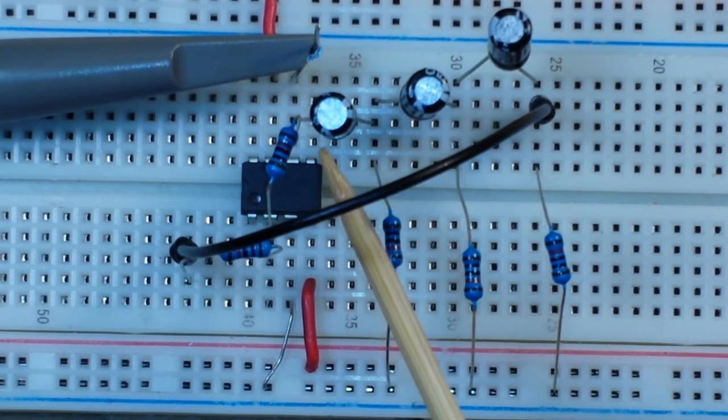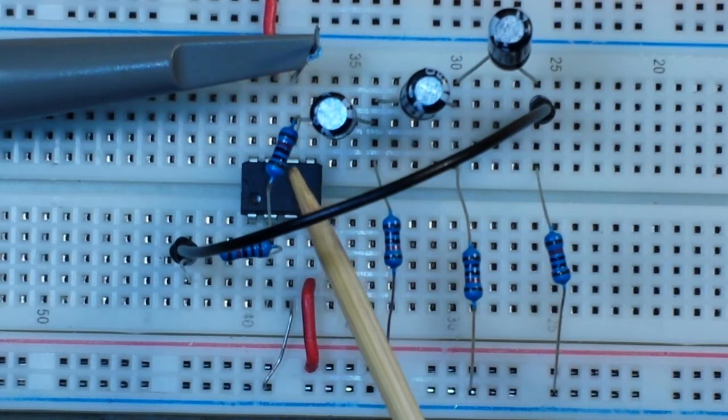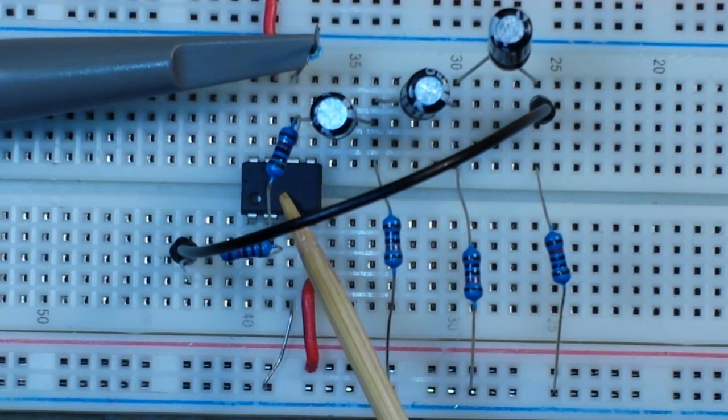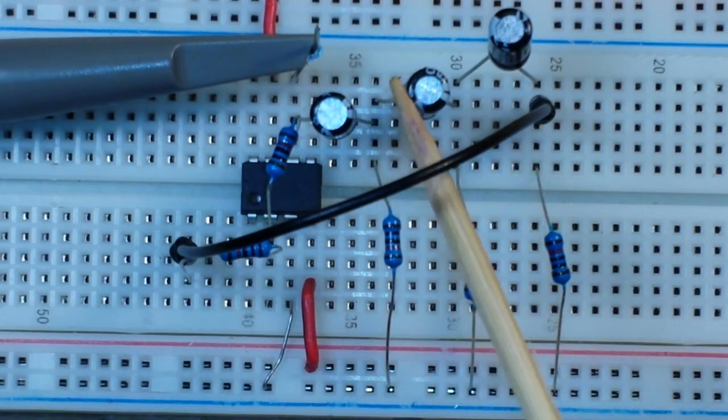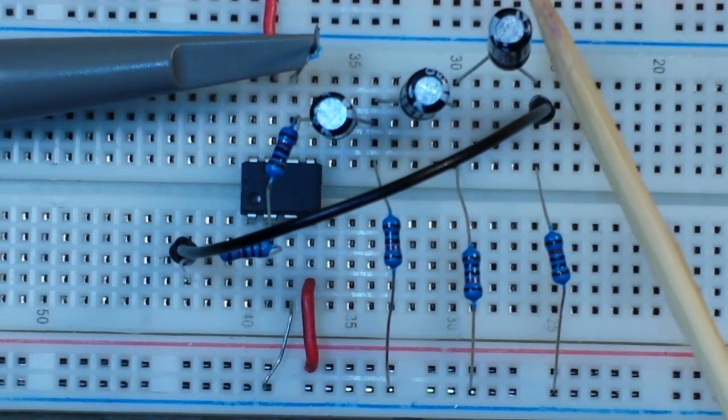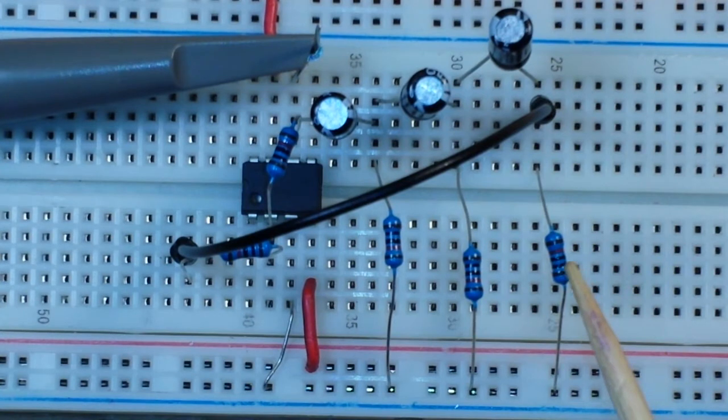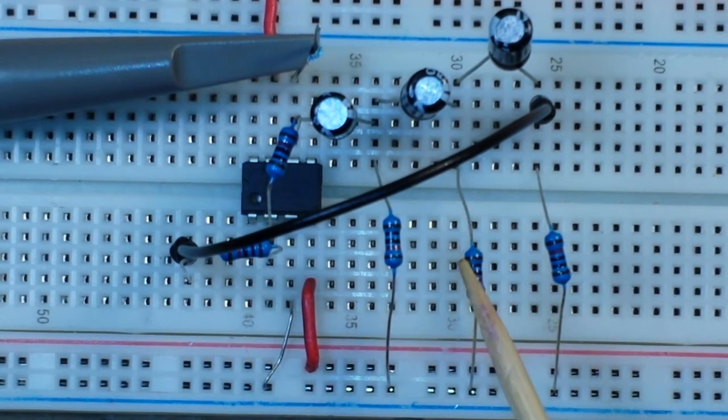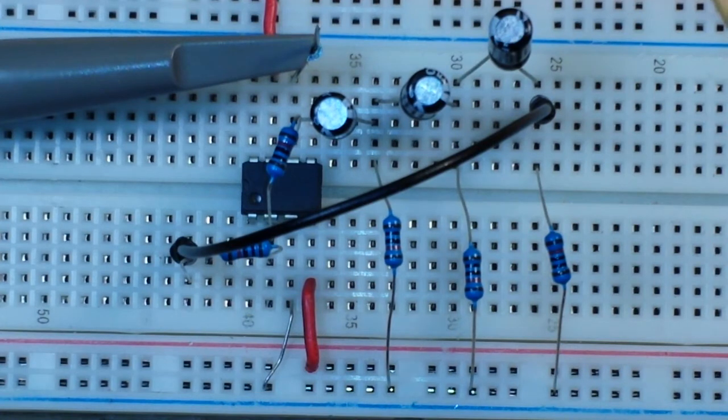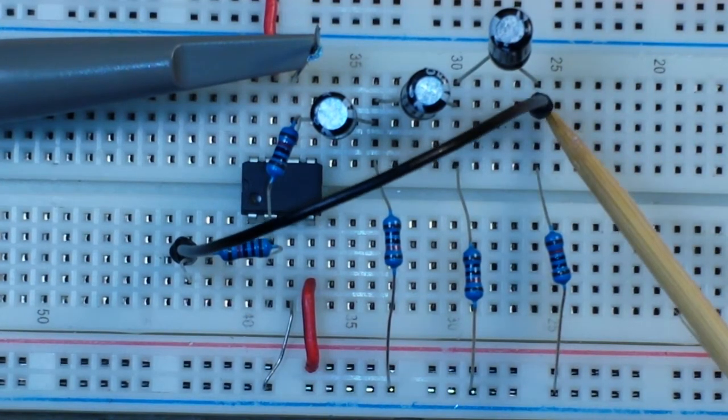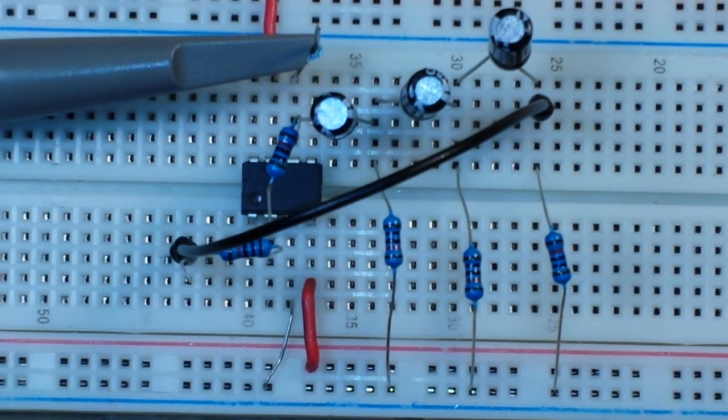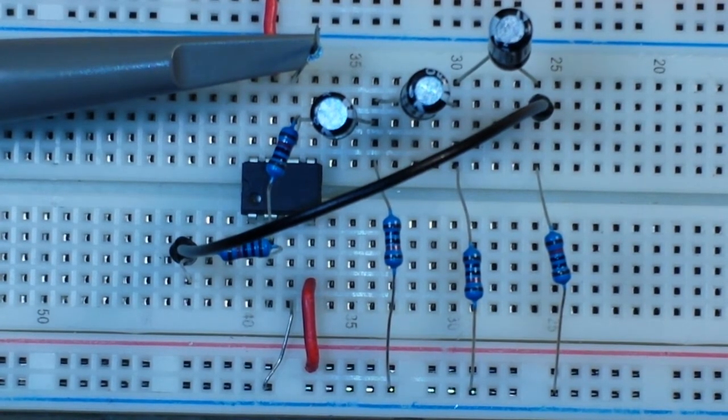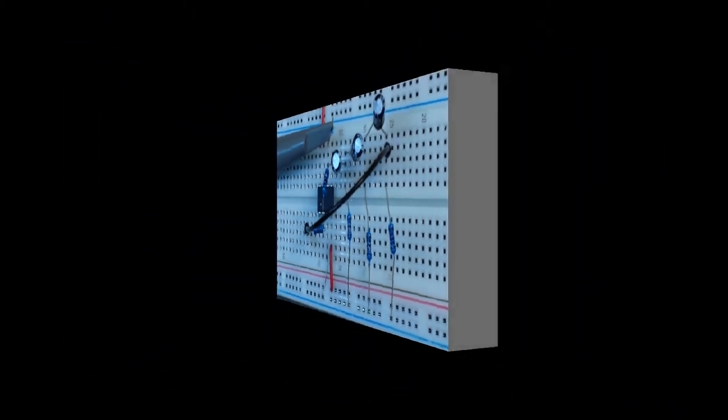From our output we have this 10k resistor feeding back into our inverting input. Also from our output we have the string of three capacitors and we have three resistors coming off. And from this final one here we're feeding back through another 10k resistor into the inverting input. So let's go take a look at that in the scope.